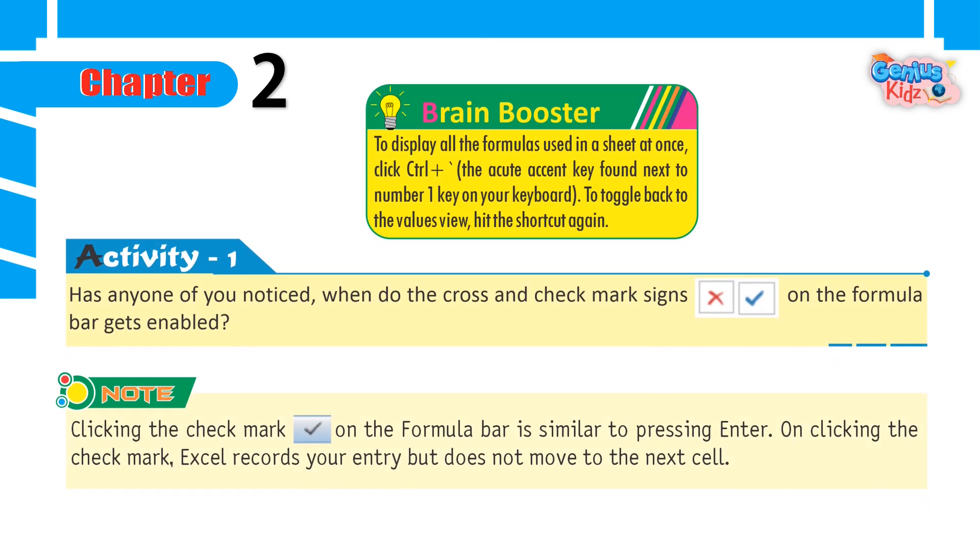Brain Booster: To display all the formulas used in a sheet at once, click Control plus the acute accent key found next to number 1 key on your keyboard. To toggle back to the values view, hit the shortcut again.